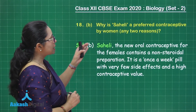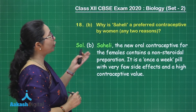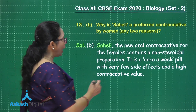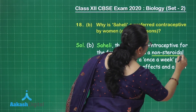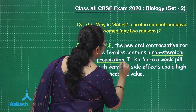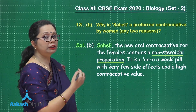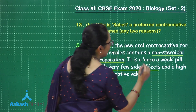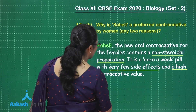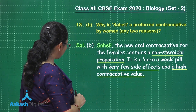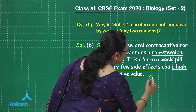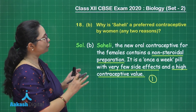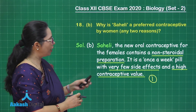Saheli is an oral contraceptive available for females and it is nonsteroidal. Because it is nonsteroidal, side effects are minimized — it has very few side effects and a high contraceptive value. This part of the question is worth one mark. So the entire question 18 is for three marks, with a two-mark part A and a one-mark part B.